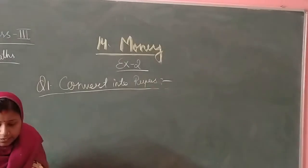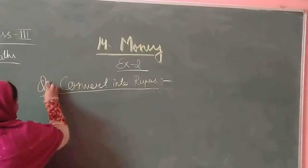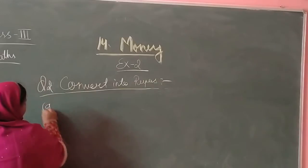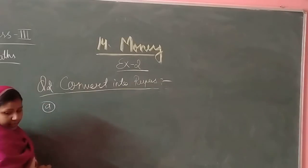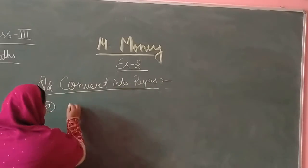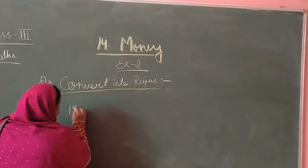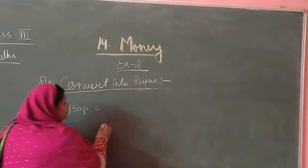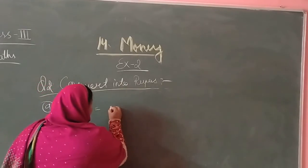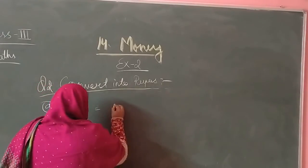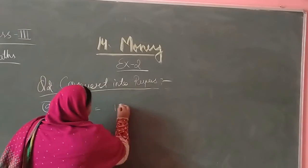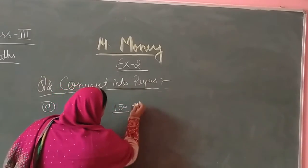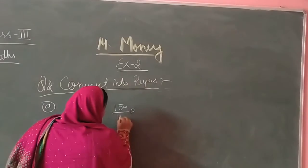Our first question in part 2 is 150 paisa. We divide 150 by 100. Moving the decimal point gives us 1.50 rupees.